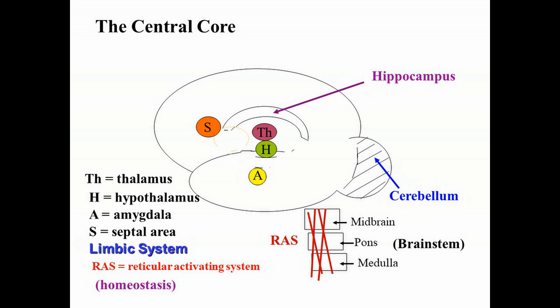RAS refers to the reticular activating system. Let's take the midbrain first. All sensory information except olfaction — your sense of smell — travels up the spinal cord, where there are reflex centers for sneezing, coughing, and vomiting. These are reflexive behaviors under control of the midbrain. And it's evolutionarily adaptive — sneezing, coughing, and vomiting are ways to quickly remove toxic substances from our bodies.